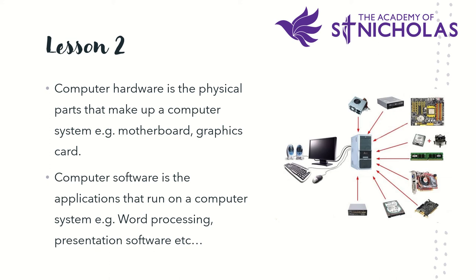Alongside hardware comes software. Software is basically the applications that run on a computer system — things like word processing and presentation software. Different pieces of software have different uses. For example, if I wanted to edit an image I would use photo editing software such as Photoshop, and if I wanted to create a video I would use something like iMovie or Premiere Pro. The main difference is that hardware is the physical elements of the computer, whereas software is defined as the applications that run on a computer system. Software also includes things like the operating system.